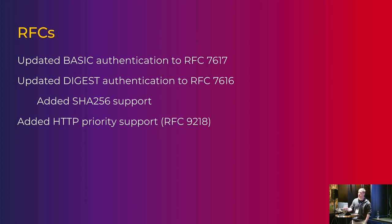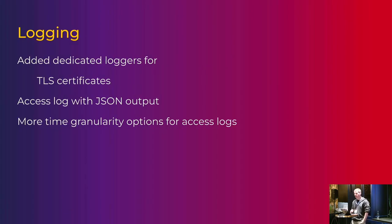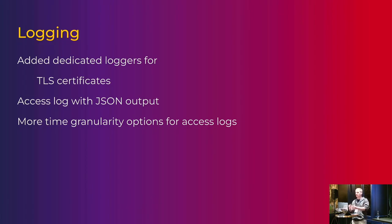On the logging side, we've added dedicated loggers for specific things — TLS certificates being one example — where you want detailed information. There is now a dedicated logger so you can get absolutely everything by turning on debug logging for that logger, but it's not enabled by default. Access logs are now available with JSON output, and additional granularity options have been added for access logs, so whether you want timing in seconds, milliseconds, or microseconds, you can have it.